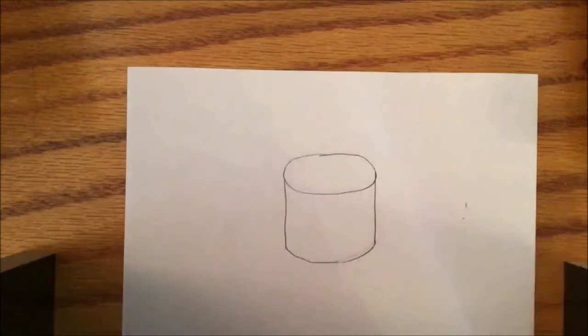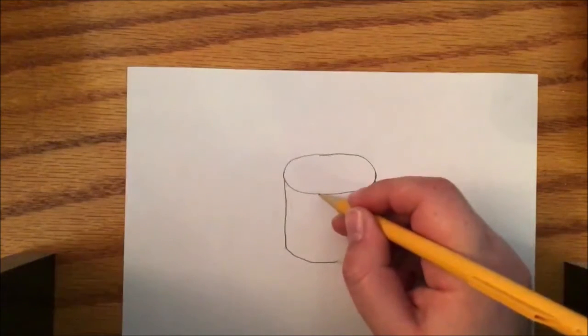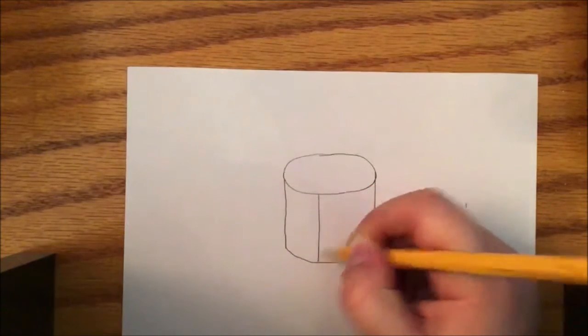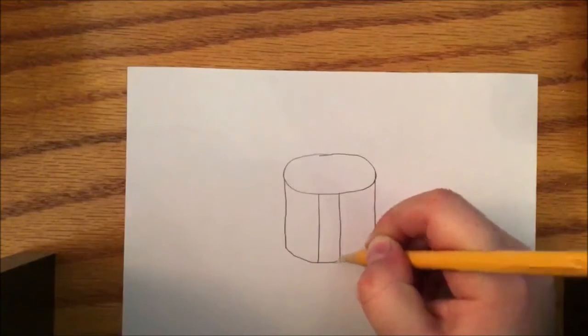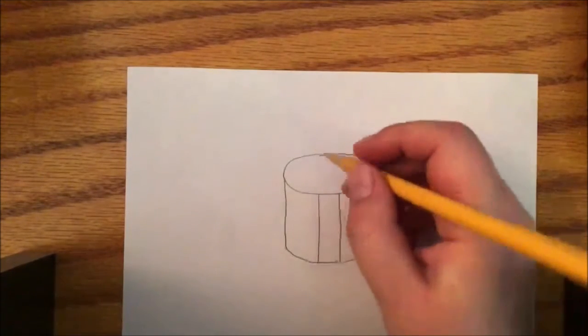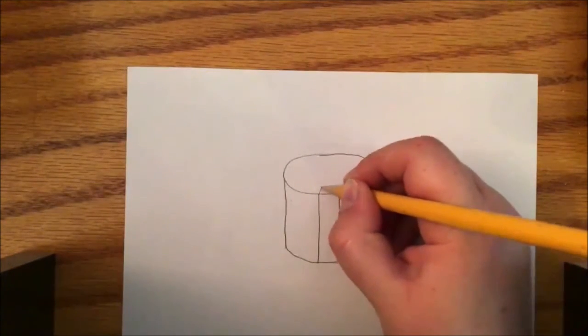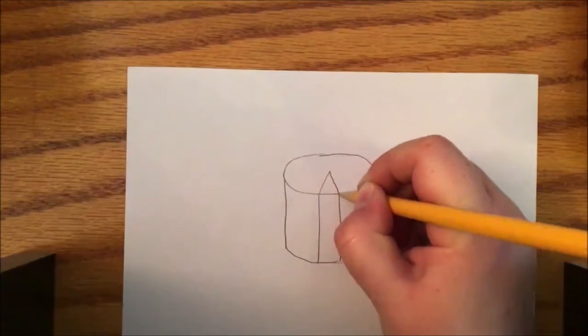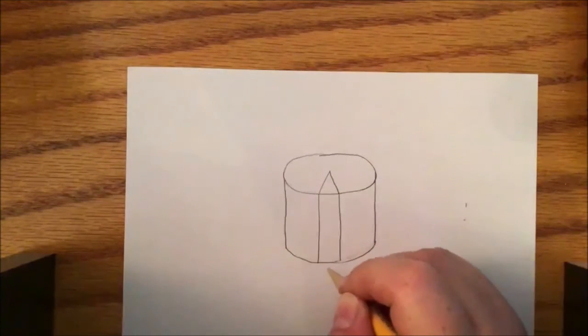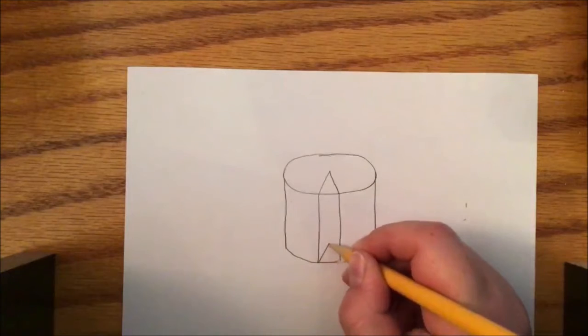Then, if you want to make it look like someone has already sliced your cake, you're going to draw two lines down. And then, in between those two lines, a little triangle shape at the top and at the bottom.